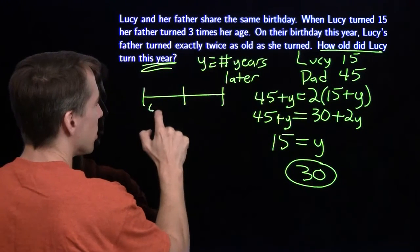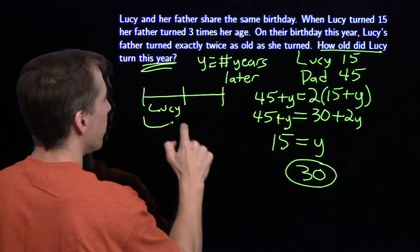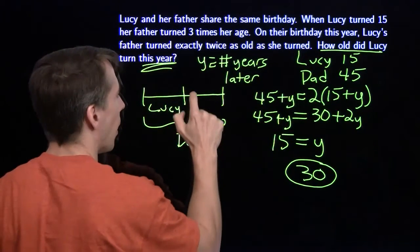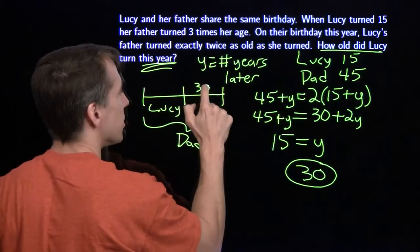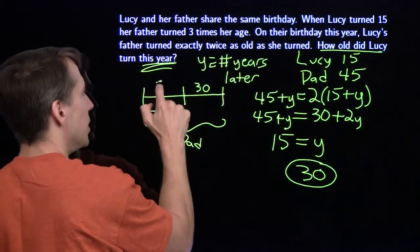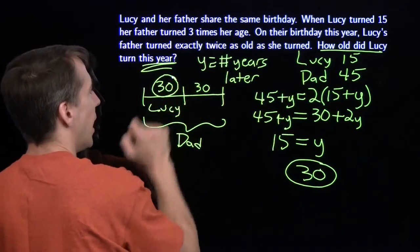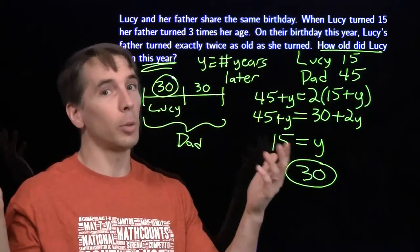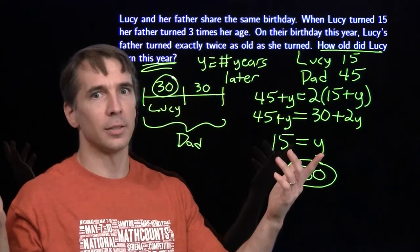This difference, they're always 30 years apart. This is 30. And if dad is twice the age of Lucy, that means this other piece has to be 30 as well. And there it is, the gold standard of problem solving: solve the same problem two different ways.